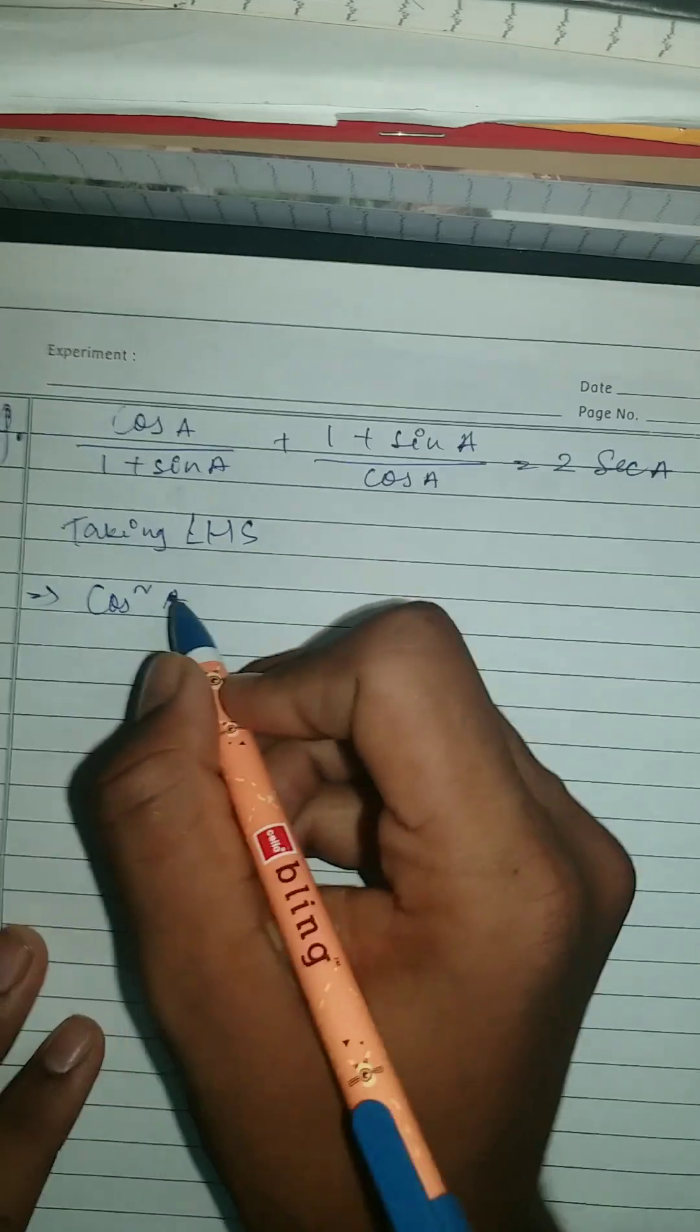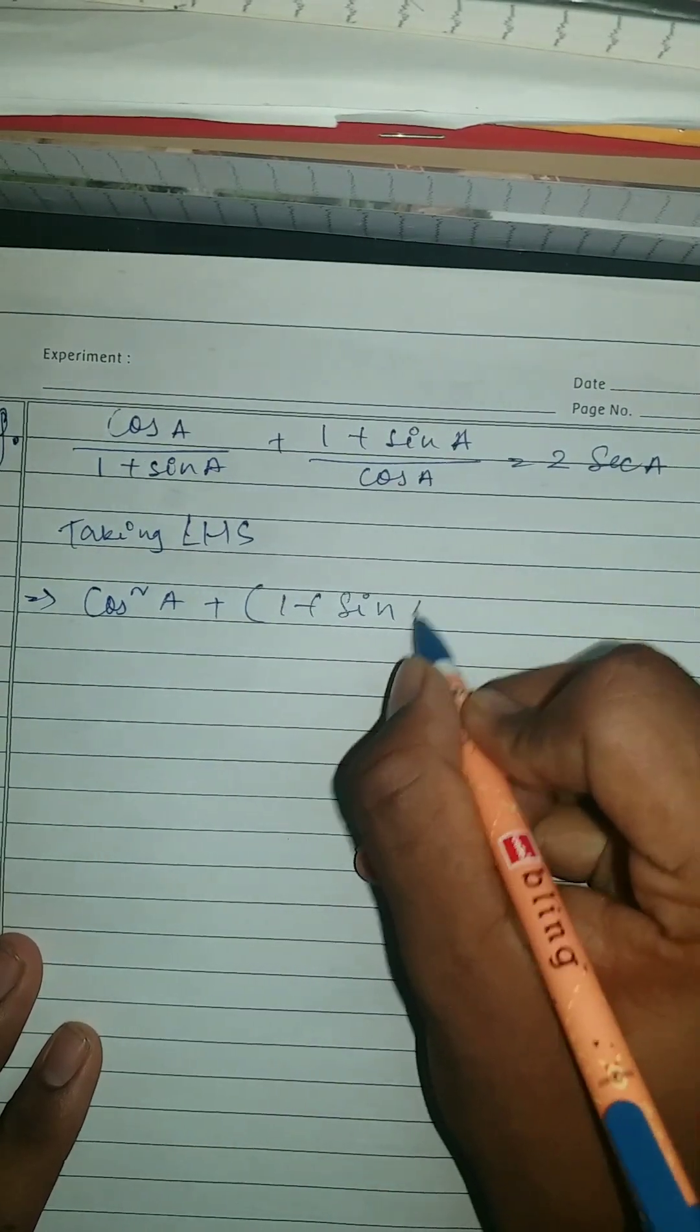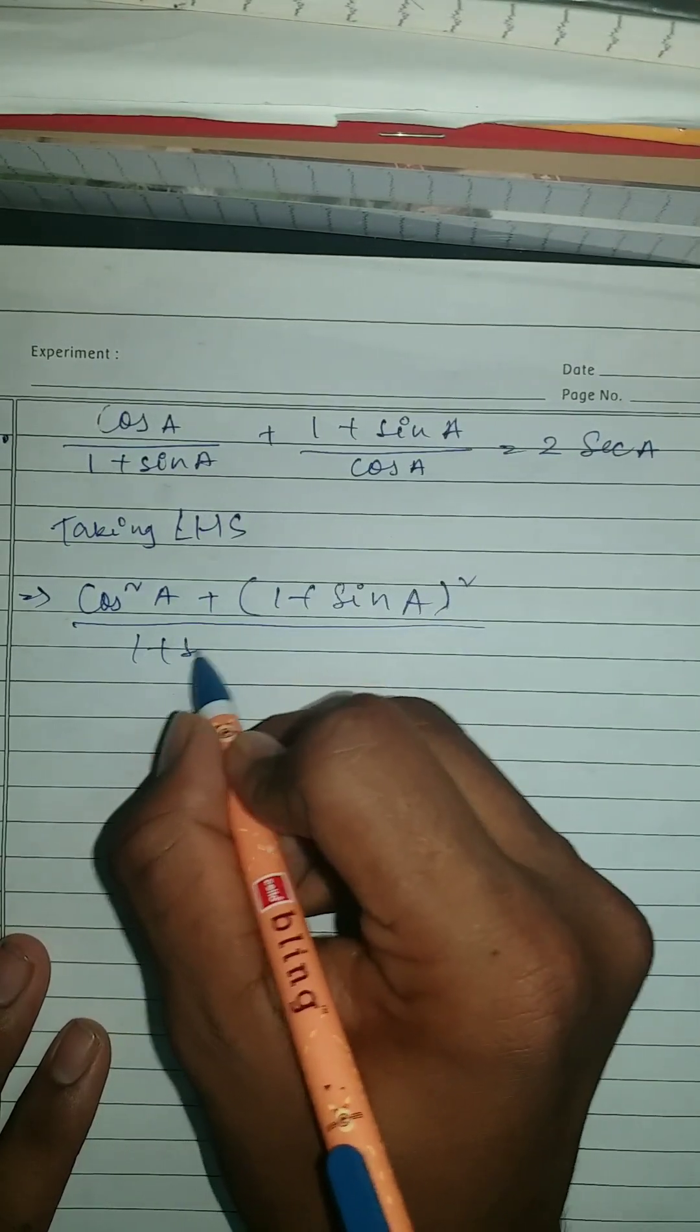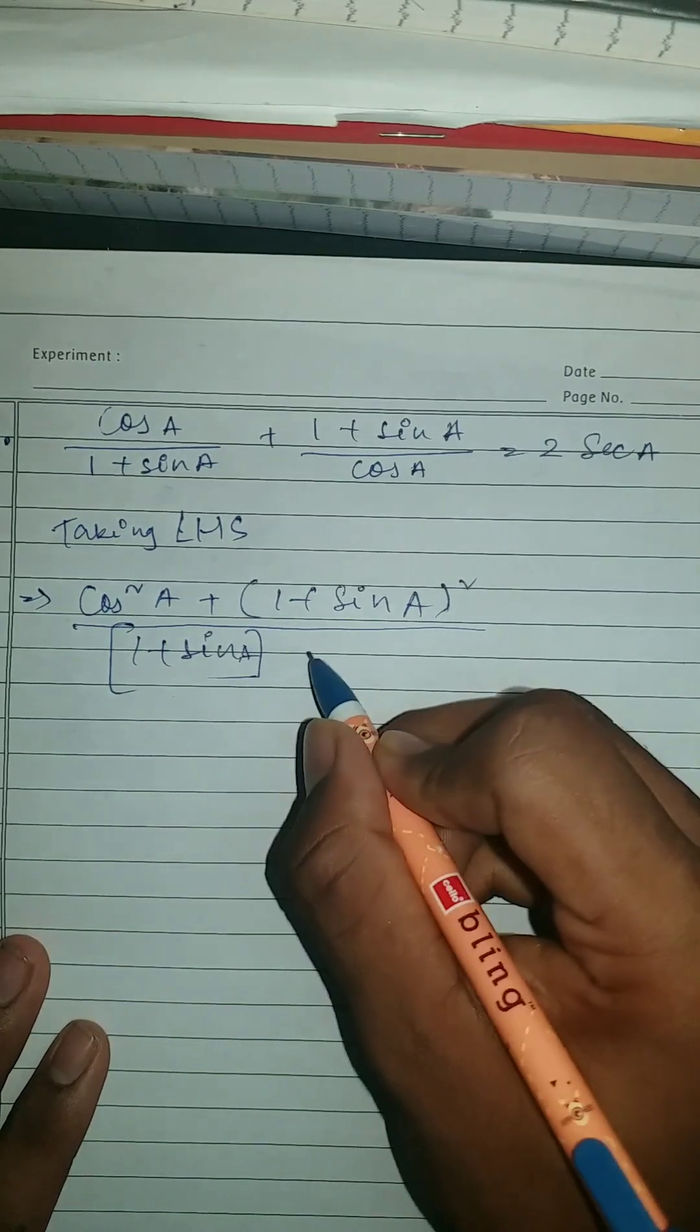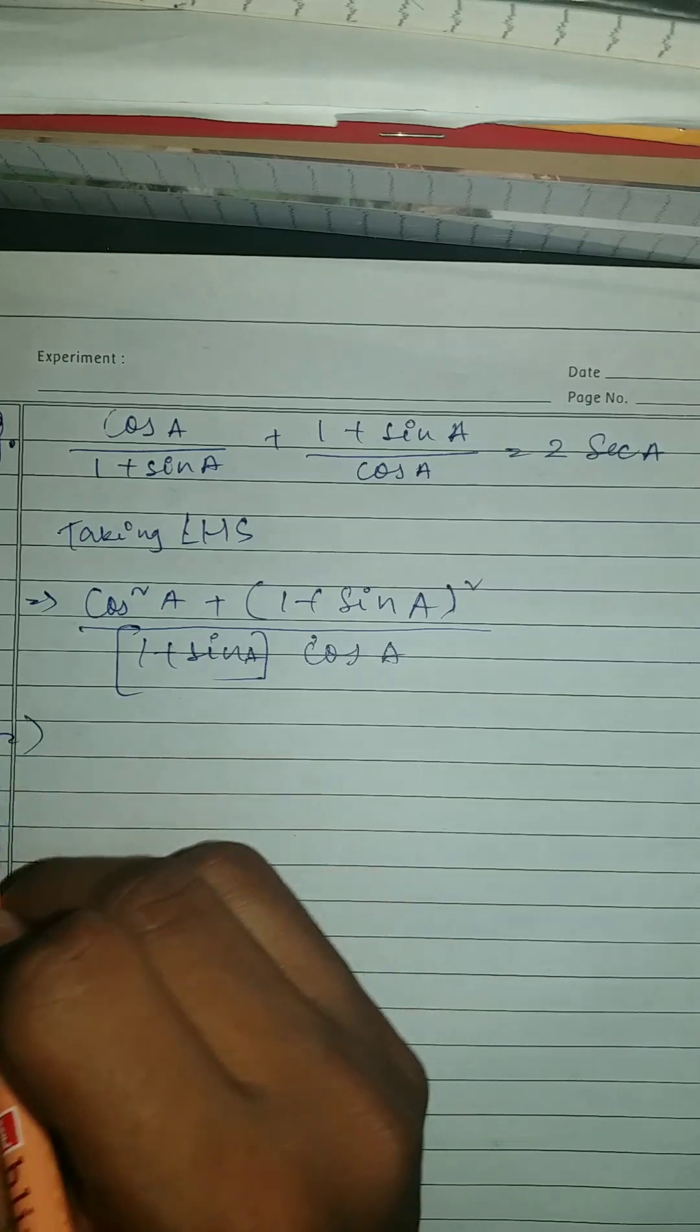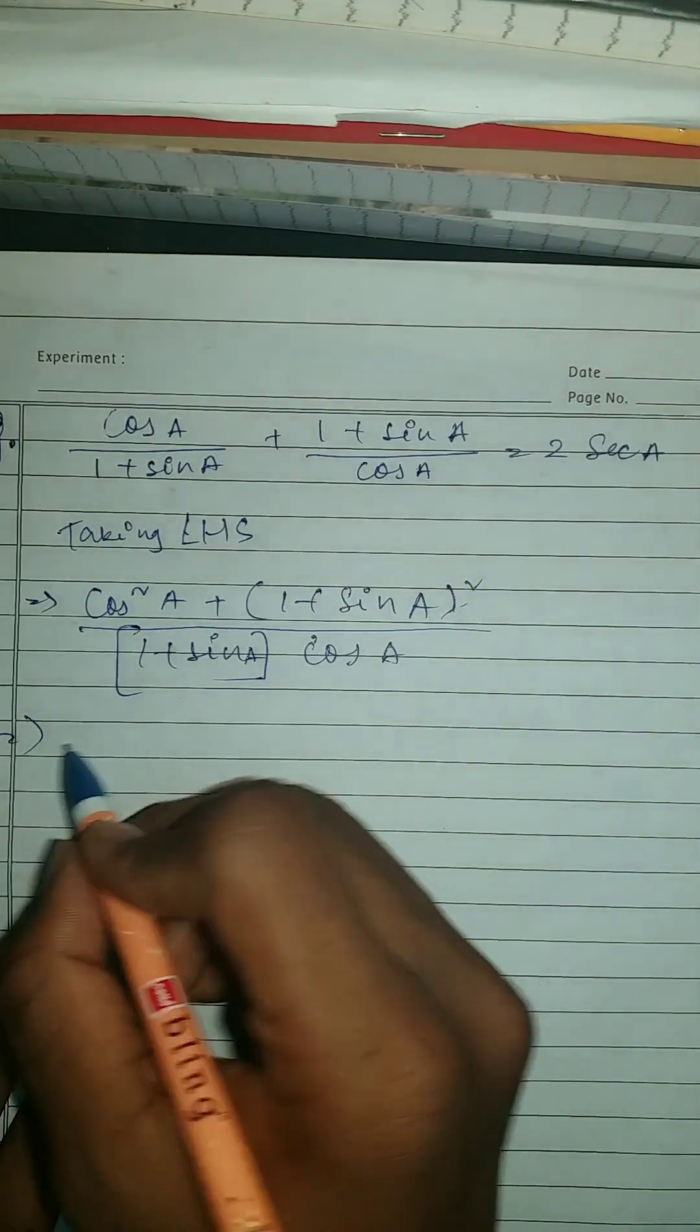So cos square a plus 1 plus sine a whole square upon 1 plus sine. Okay, and here cos a. So now what we're gonna do, we're going to open this.